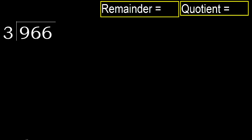966 divided by 3. 9 is not less, therefore start with 9. 3 multiplied by which number is nearest to 9, but not greater? 3 multiplied by 4 is 12, it is greater. 3 multiplied by 3 is 9, it is not greater. 9 minus 9 is 0.